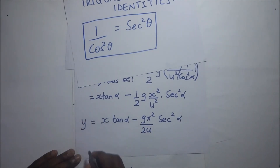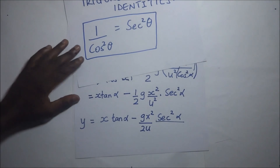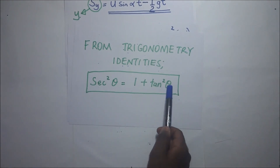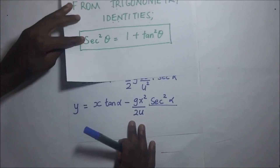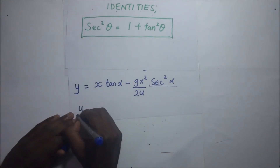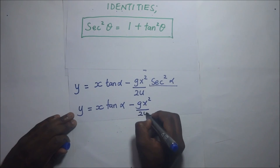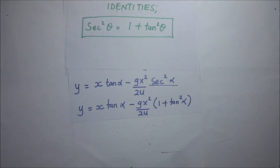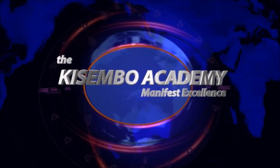This is essentially the equation of the trajectory. We can simplify further using the trigonometric identity sec²(alpha) equals 1 plus tan²(alpha). Therefore the final equation of the trajectory is: y equals x tan(alpha) minus gx² over 2u² times (1 plus tan²alpha).